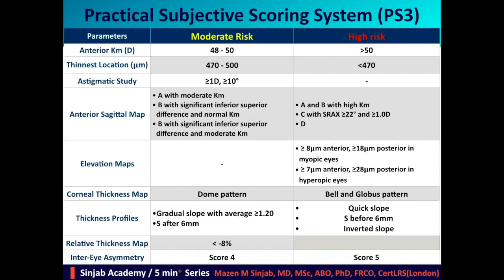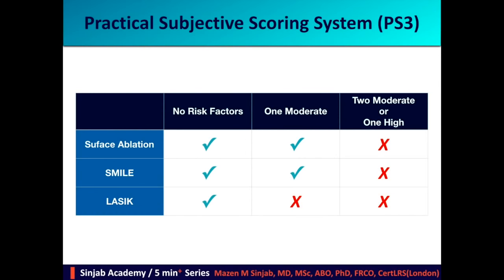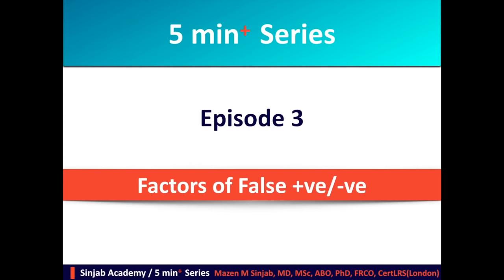This is a summary table of the Practical Subjective Scoring System. In clinical practice: if there are no risk factors, one can proceed with surface ablation, SMILE, or LASIK. If there is one moderate risk factor, LASIK is not recommended but surface ablation or SMILE are acceptable. If there are two moderate risk factors or one high risk factor, laser vision correction should not be performed. In the next video, I will discuss factors of false positives and false negatives.